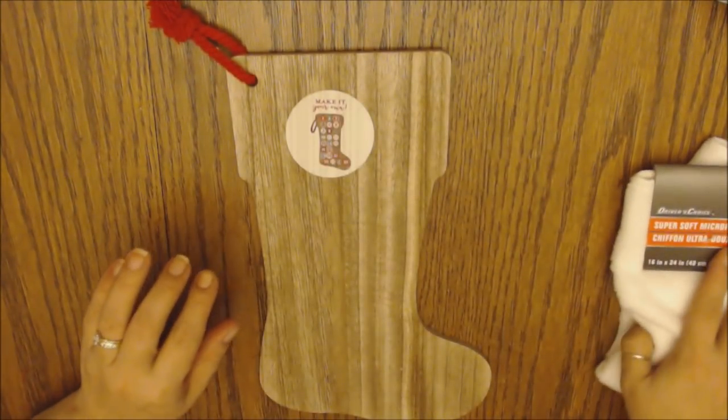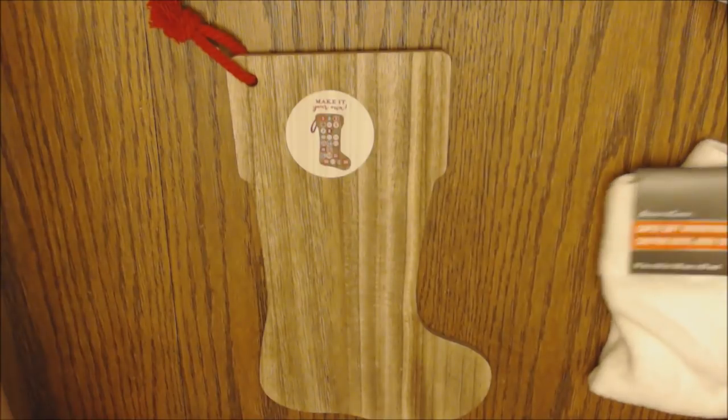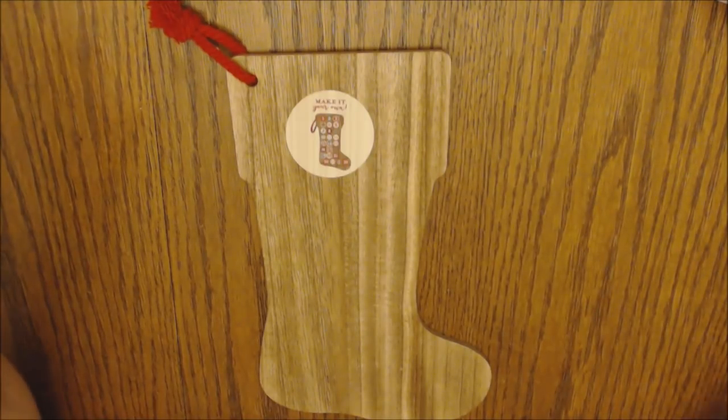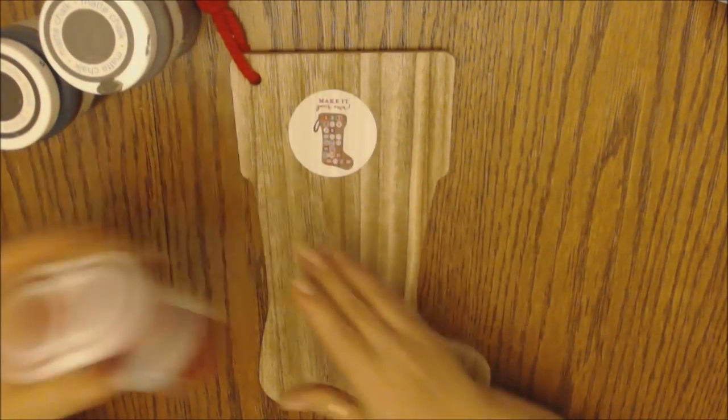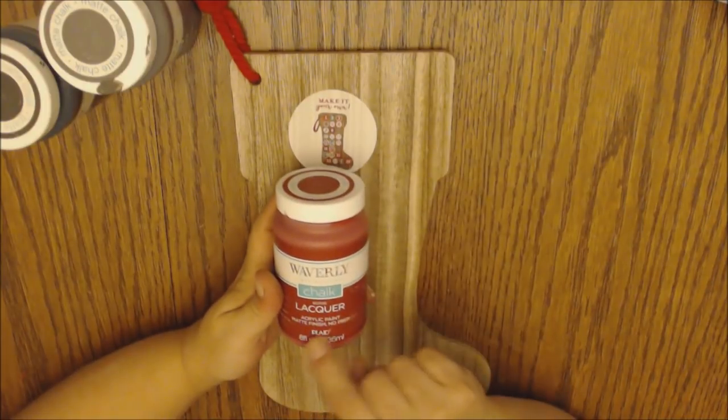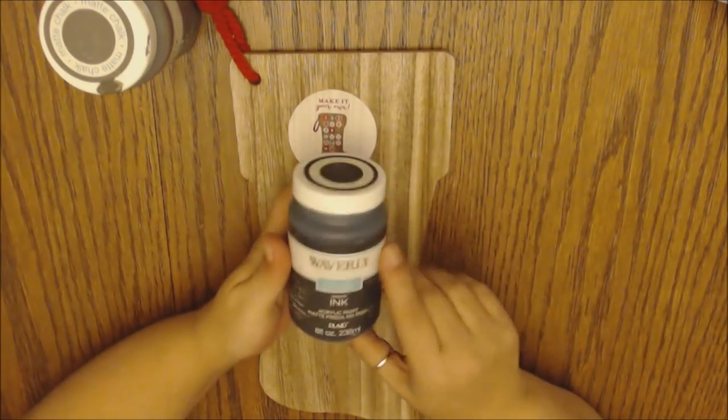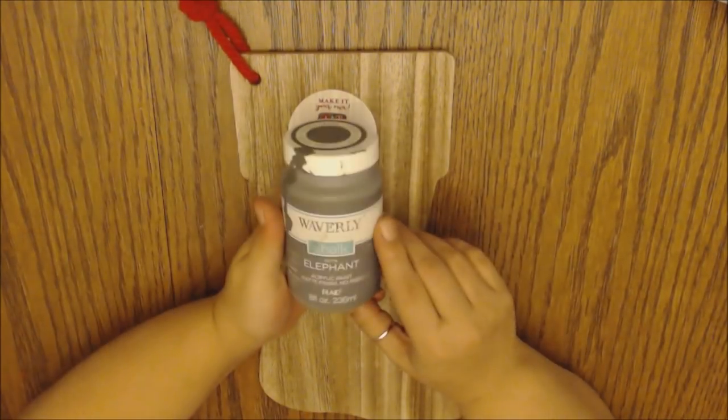Then you will need some paint and I am going to use my Waverly chalk paint that I get at Walmart. And I'm going to be using the red or lacquer, the black or ink, and then the elephant, which is a darker gray.